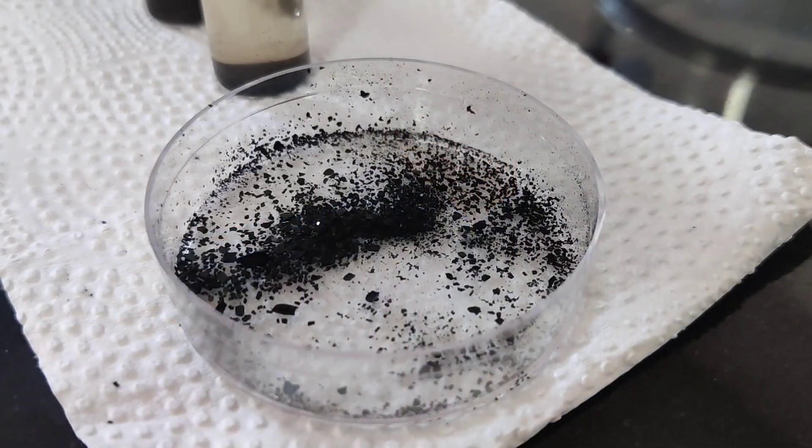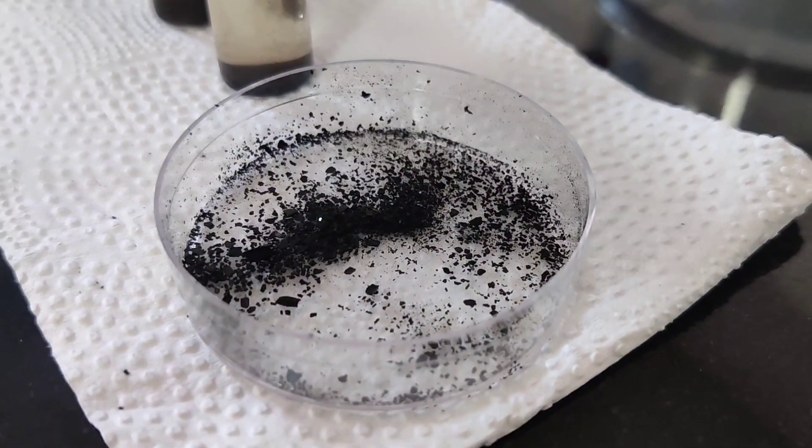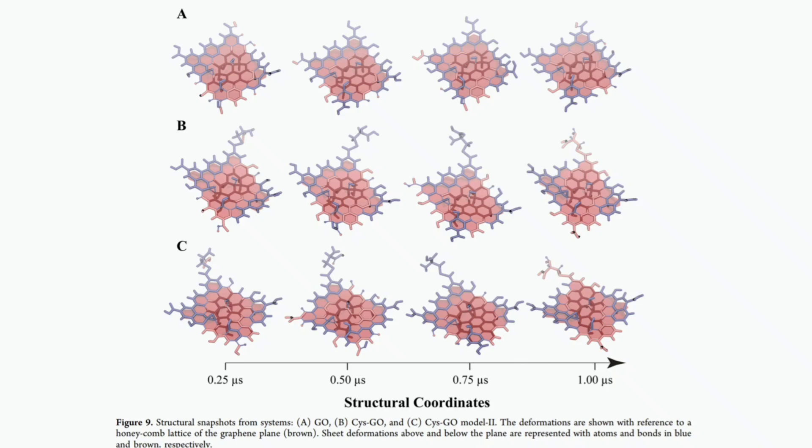Graphene is a well-known carbonaceous material which gained a lot of attention since its discovery and the method of preparation back in 2004. Graphene is quite unique because of its properties such as high electrical conductivity, thermal property, and optical property, based on which we can fine-tune and modulate it for various biomedical applications.